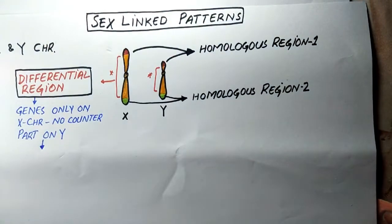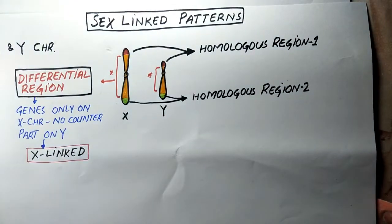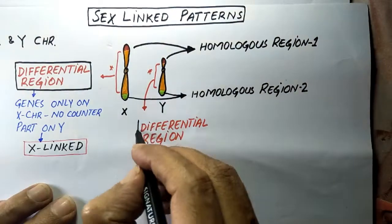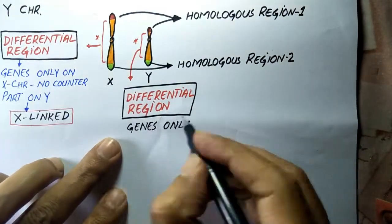The differential region of Y also contains specialized genes that are absent on the X chromosome, such as SRY, the sex determining region of the Y.